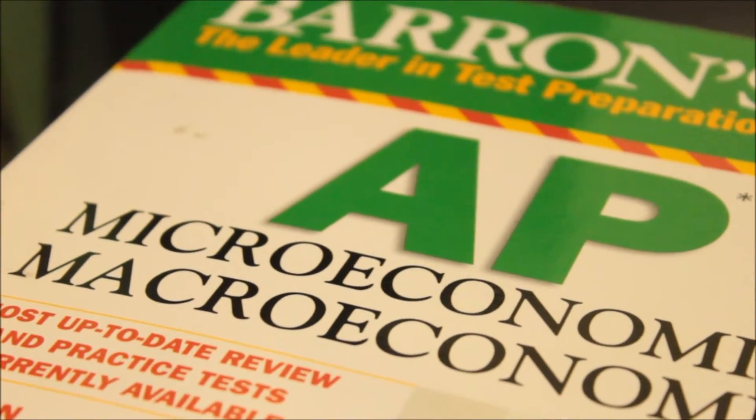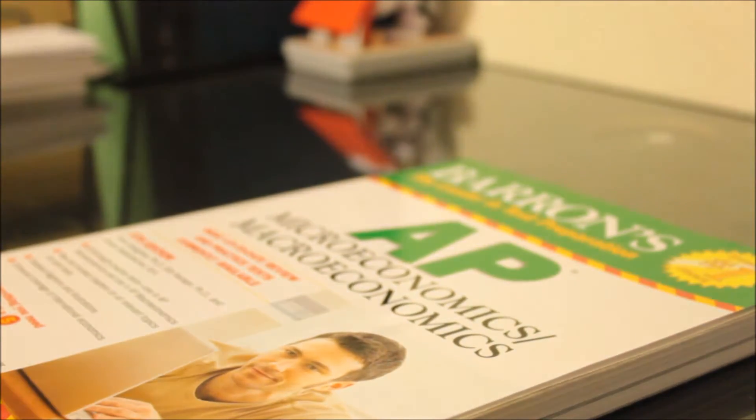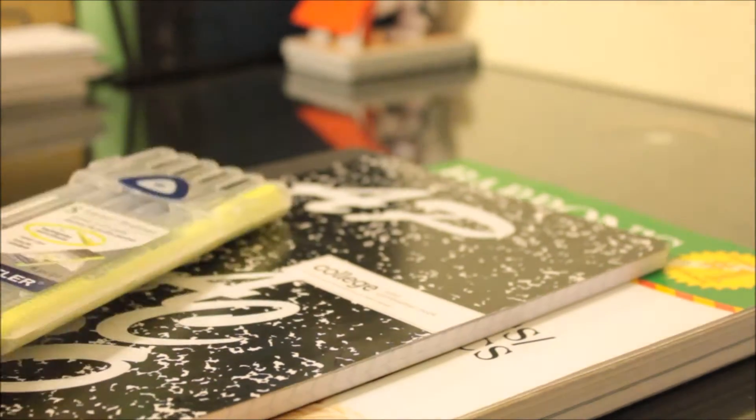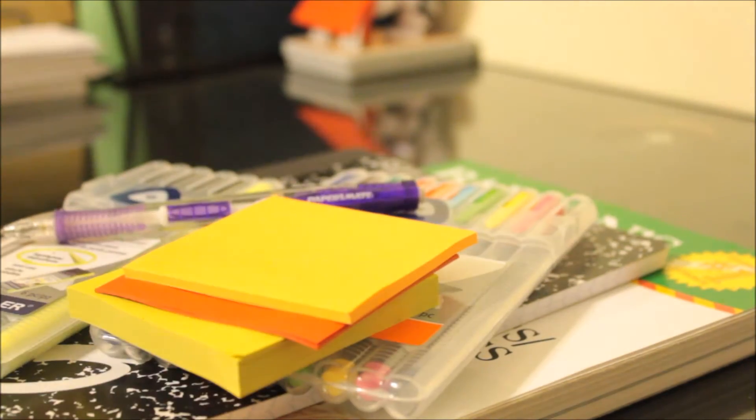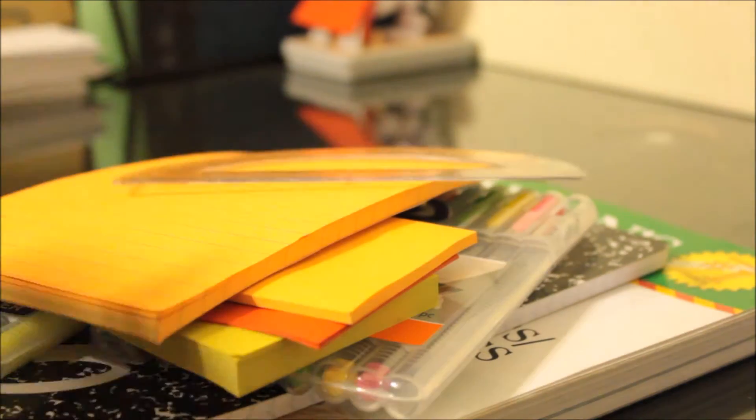So first I gather my supplies, which are my Barron's AP macro slash microeconomics textbook, my notebook, Stedler products Triplus fineliner and rollers, sticky notes, pencils, and a protractor.